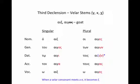Now let's look at velar stems. Velar stems are gamma, chi, and kappa. When they meet up against that dative plural sigma ending, the sigma changes to xi. Besides that, all of the endings are the same.